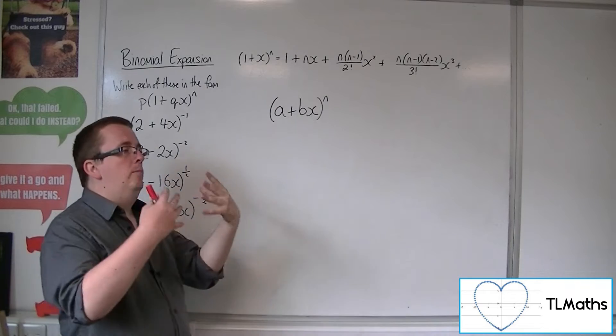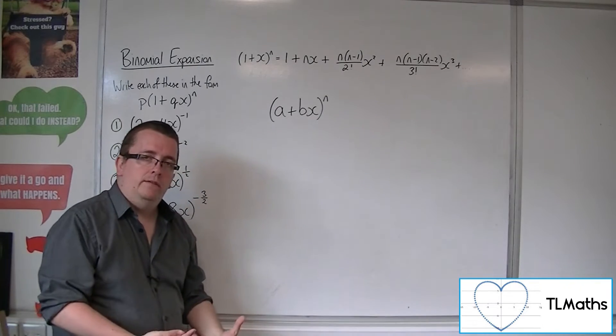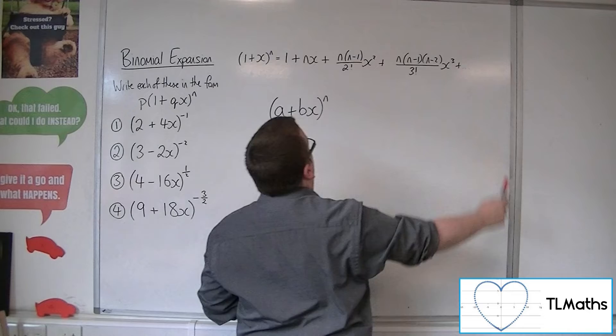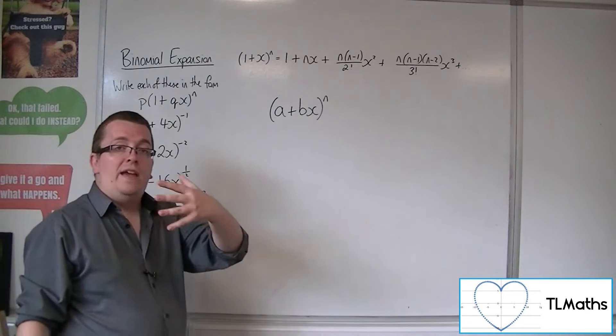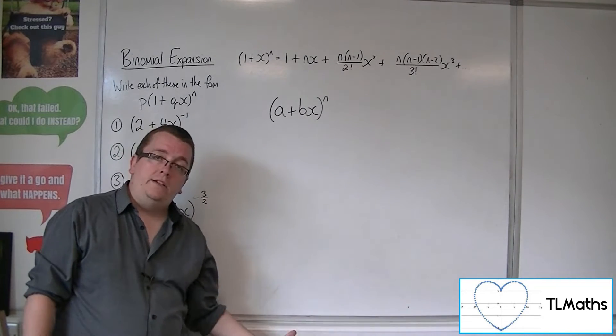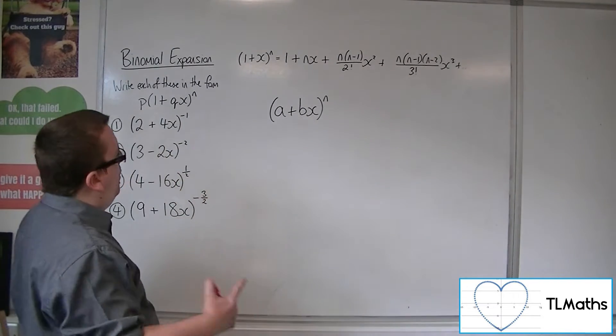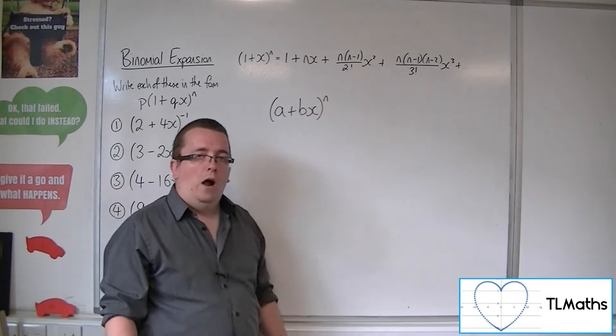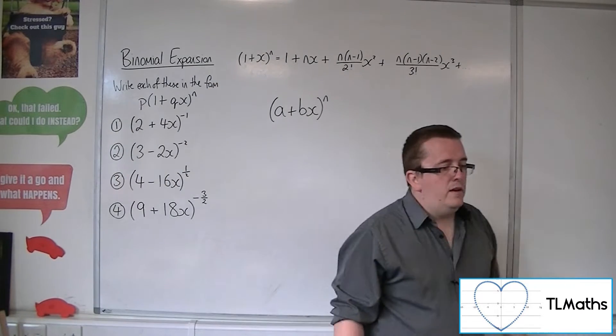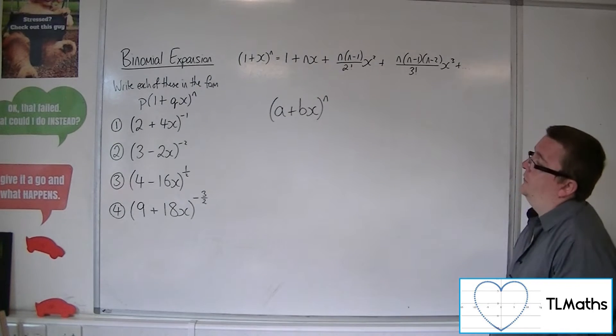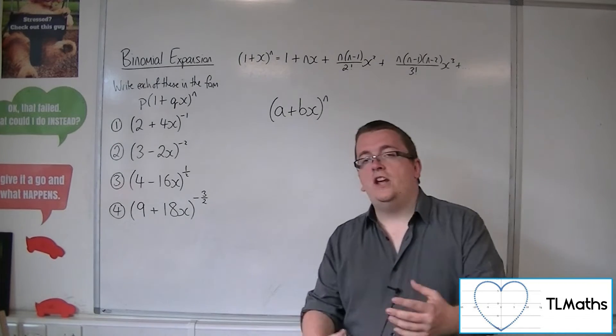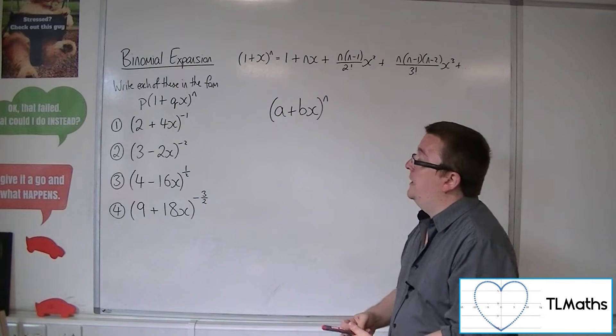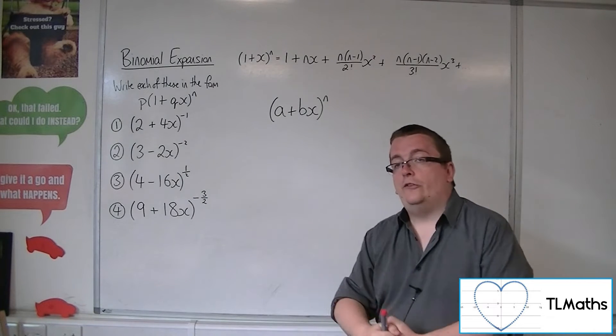Now, if we had 1 plus 2x to the n, what I could do is I could just replace each of these x's with 2x and then I've got the formula that I need. However, if that number here isn't 1, then I've got a little bit more of a problem in my hands. And we need to know how to deal with that problem so that we can binomially expand any of these 4.